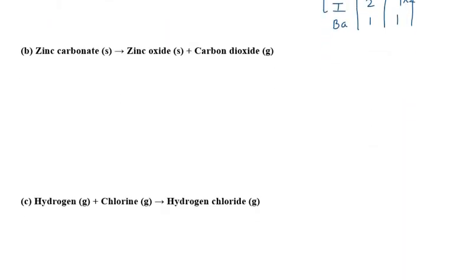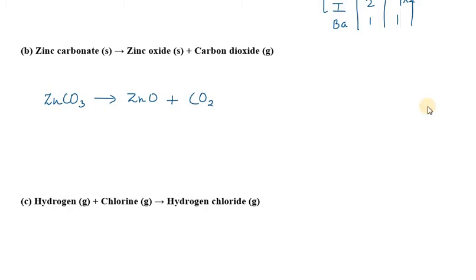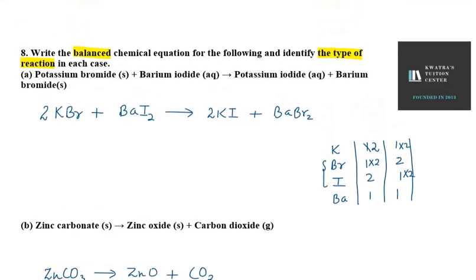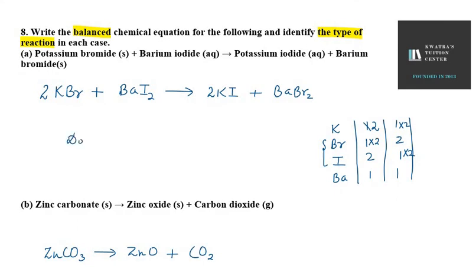Now we will write for Part B. In Part B we have zinc carbonate — ZnCO₃ — which gives us zinc oxide plus carbon dioxide. Check all the terms: Zn is 1 on both sides, carbon is 1 on both sides, oxygen is 3 on both sides — so it is balanced. This is a decomposition reaction, because one reactant is breaking into two products. The first reaction is double decomposition, because ions are exchanging.